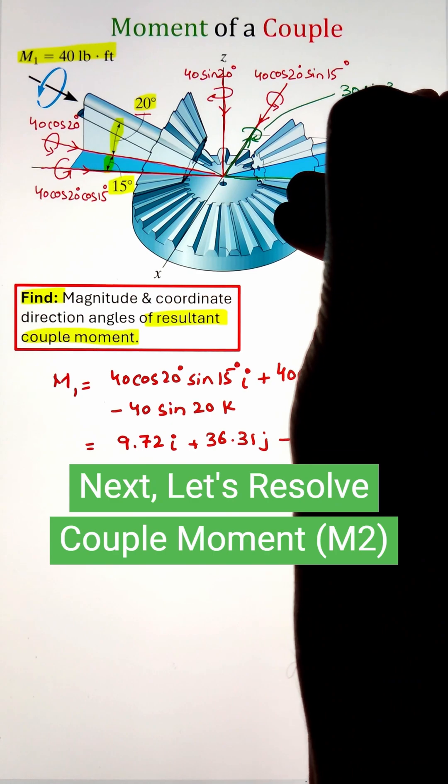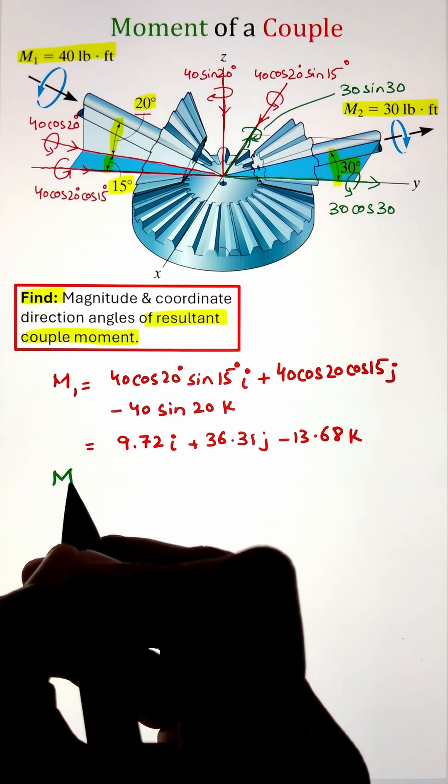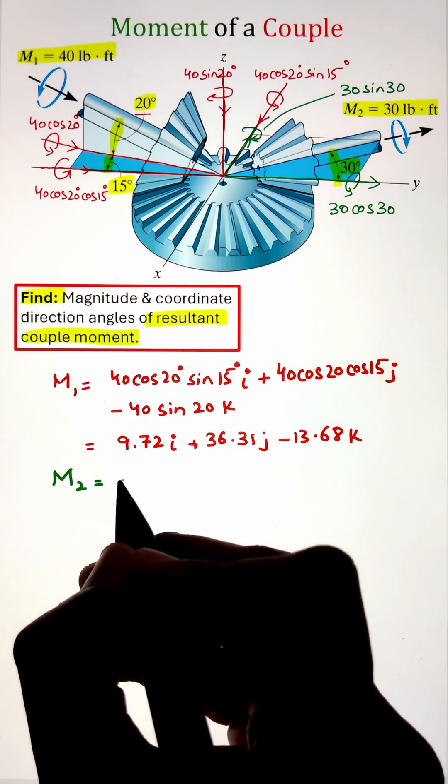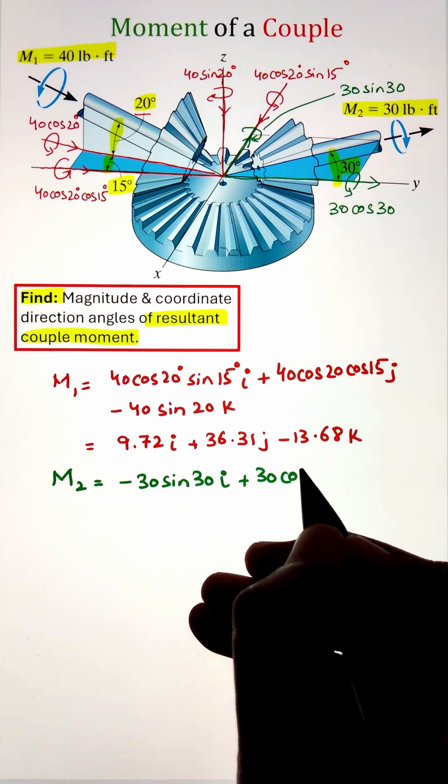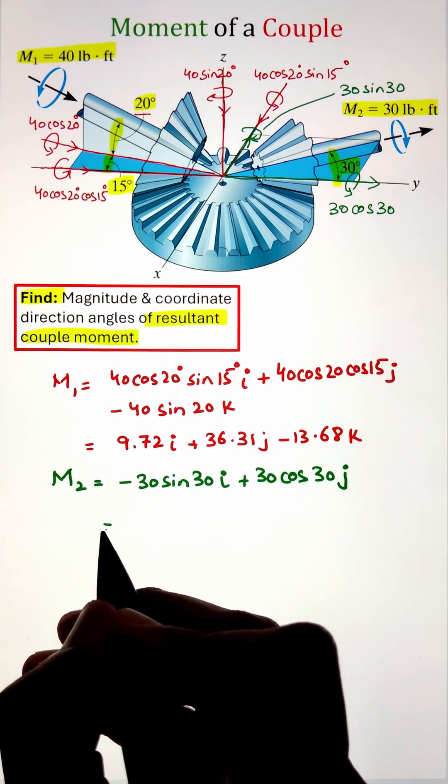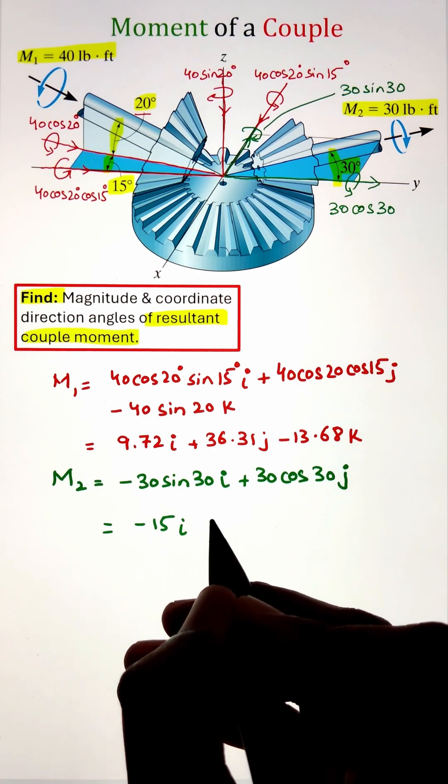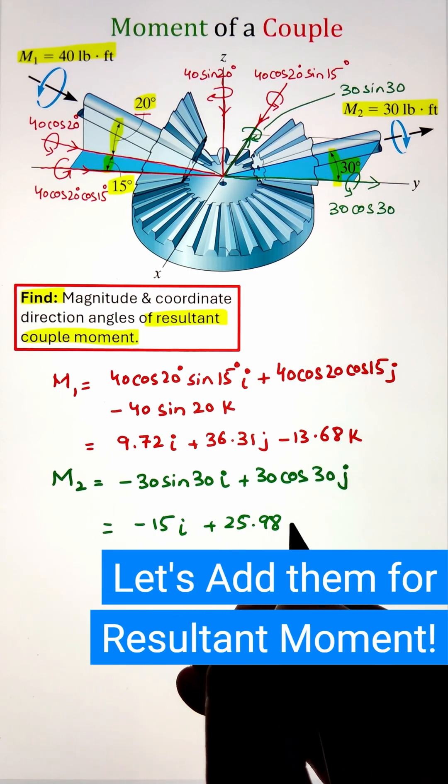Here again, the moment is happening in the clockwise direction. That's why we have a negative i component here, whereas it is in the counterclockwise direction along the y-axis. That's why I have the positive component. Simplifying, I get the value of M2 as negative 15i plus 25.98j.